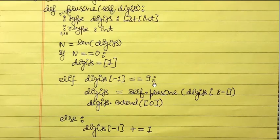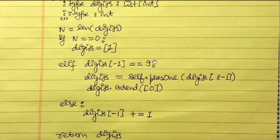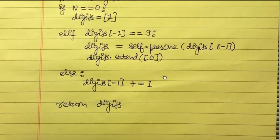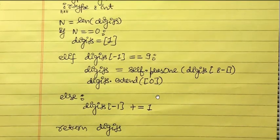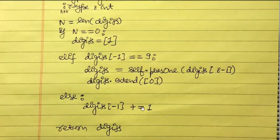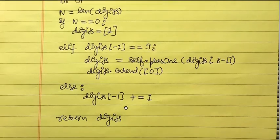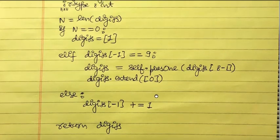After the recursive call handles digits[:-1], the nine becomes ten, so we extend by appending zero: digits.extend([0]). In all other cases — where the length is greater than one and the last digit is not nine, for example [1, 2, 3] — we simply increment the last value: digits[-1] += 1. Then we return digits.